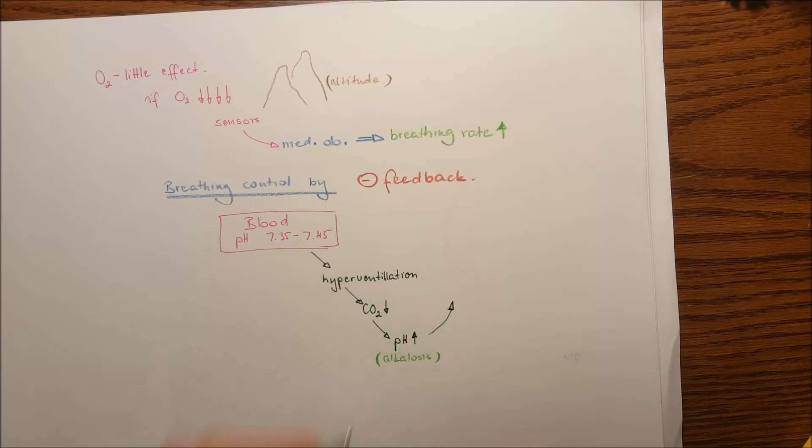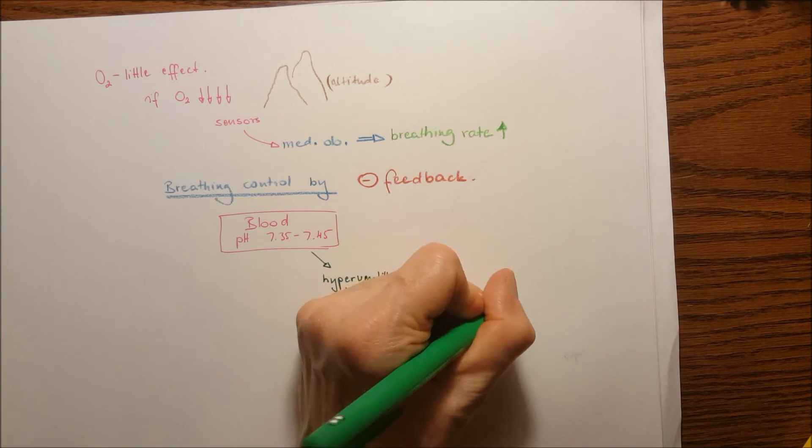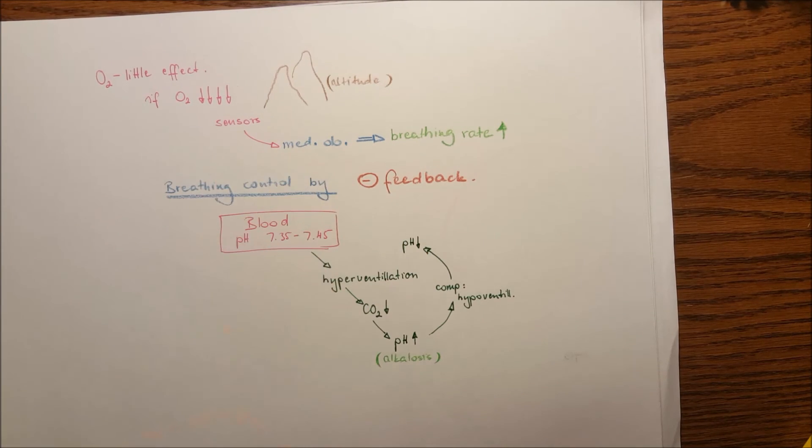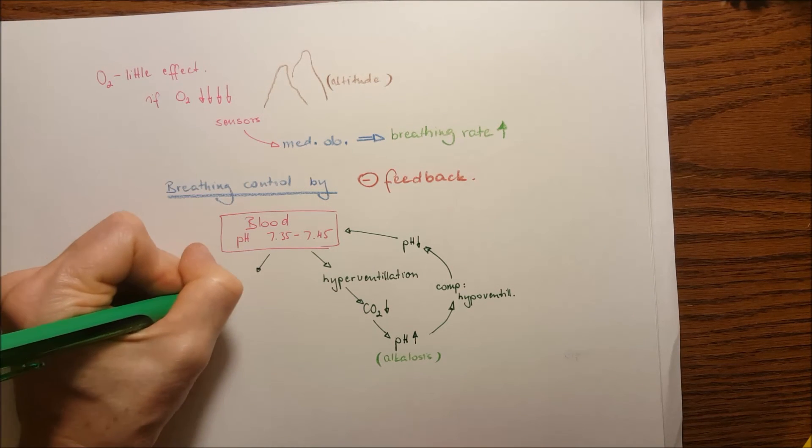The compensation for that is hypoventilation from the body. The hypoventilation will lower the pH and the blood pH will go back to normal. On the other hand, if we hypoventilate...